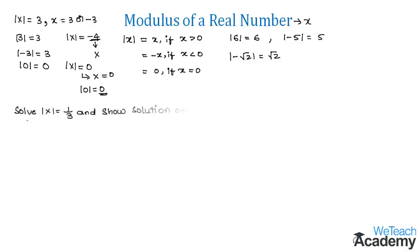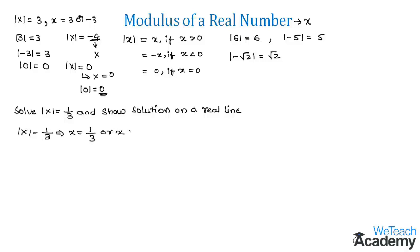Let us understand this with an example: solve mod x equals one by three, and show the solution on a number line. The given equation mod x equals one-third implies x equals one-third (a positive real number) or x equals minus one-third (a negative real number).